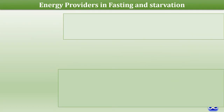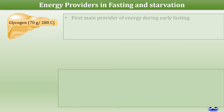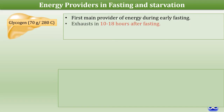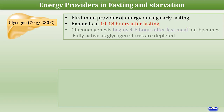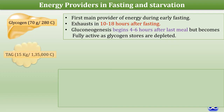The liver is the important energy provider in fasting. Glucose is stored as glycogen in the liver, and this glycogen store exhausts in 10 to 18 hours after fasting begins. Gluconeogenesis begins 4 to 6 hours after the last meal but becomes fully active as glycogen stores are depleted.